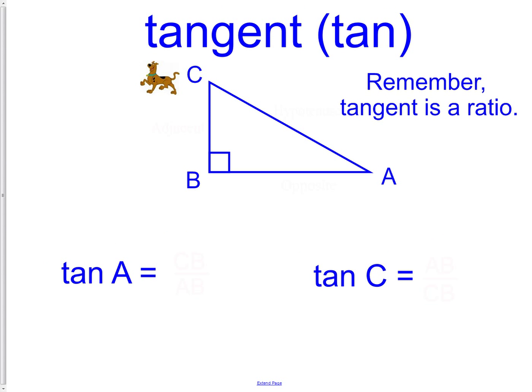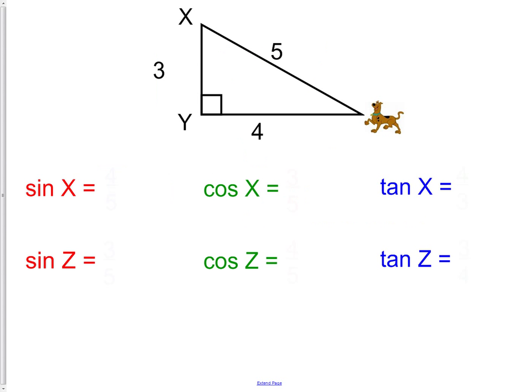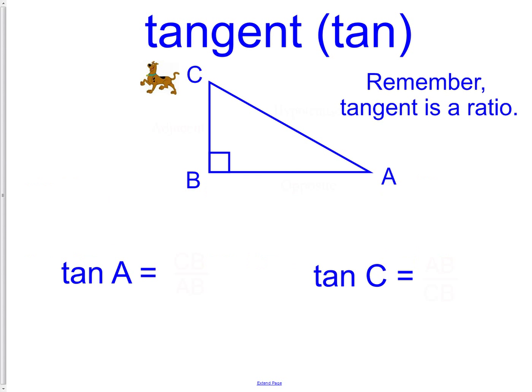Our last example here is tangent. Hopefully you can remember from tangent that tangent is opposite over adjacent. Right now, if we look, he is at angle C. Let's do that one first. Opposite of Scooby would be AB, adjacent to him would be CB. Our ratio would be AB over CB.